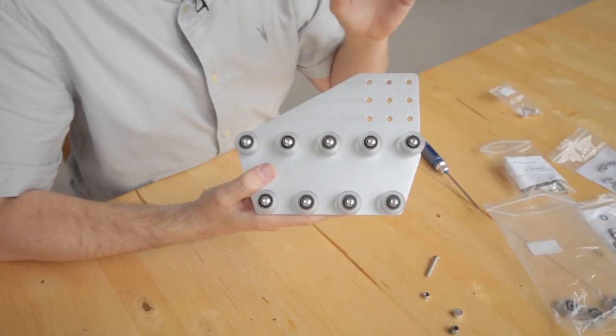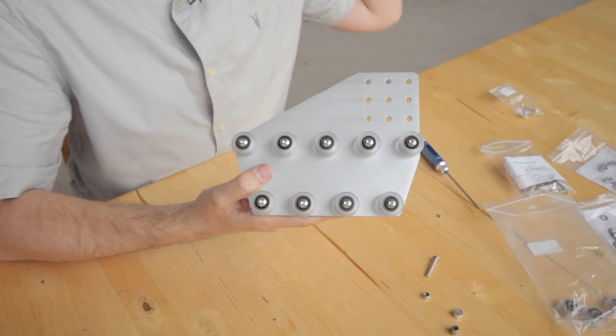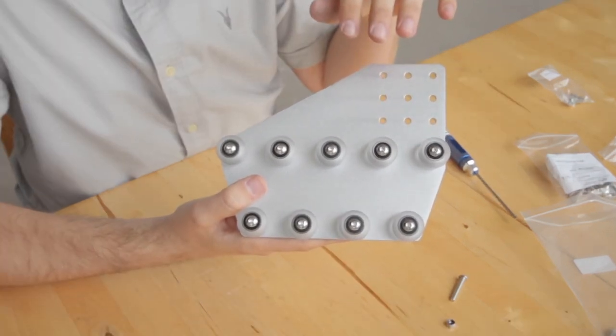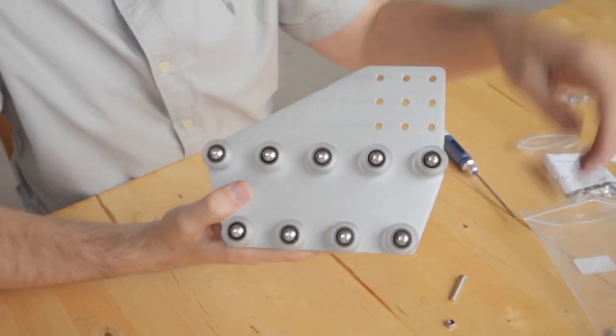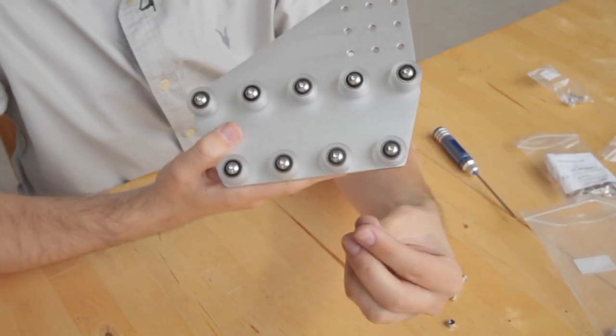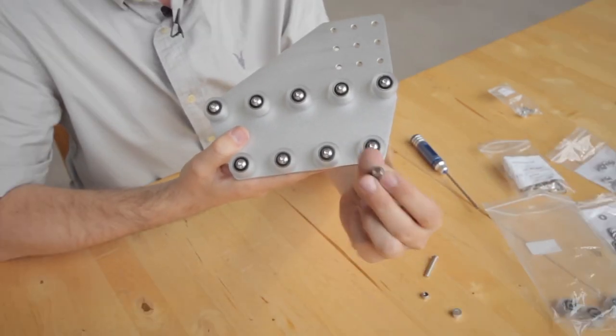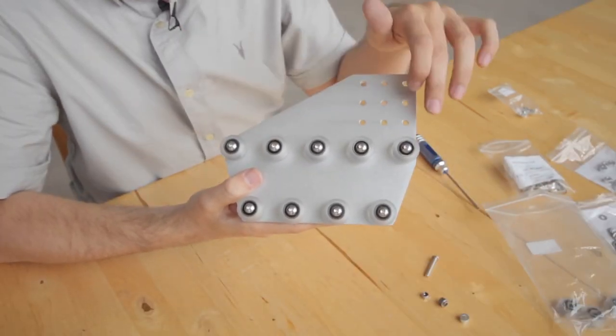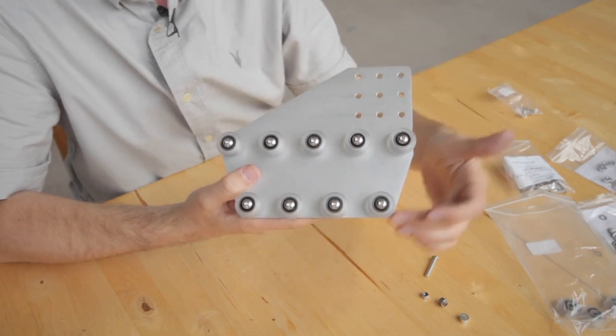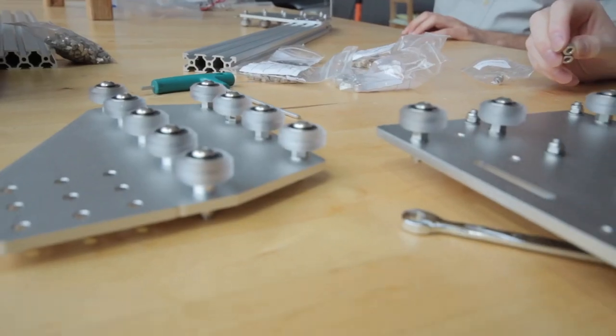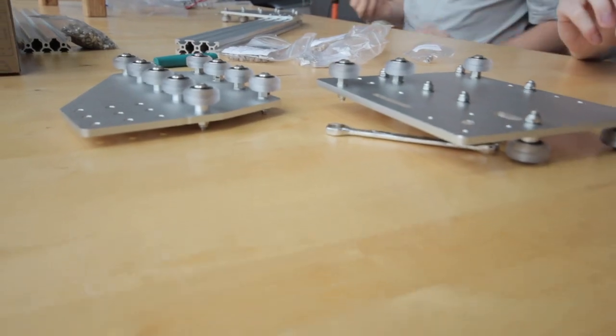First thing we did is we connected the wheels on the plate of the gantry. There are nine wheels on every side. The bottom ones are with an eccenter, that's this one. These ones are with spacers. The holes in the plate are different, so there's absolutely no way you can do it wrong.